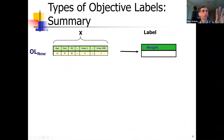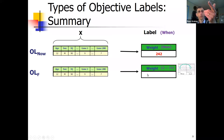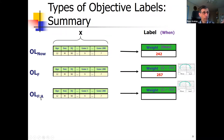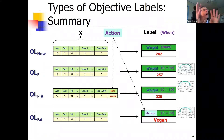Let me quickly summarize these four measures. Objective label now: here's a patient, the label is weight measured by a scale. Objective in the future: here's a patient now — in 30 days I ask what the weight is. Objective with future action: now I also have an action like a vegan diet, and I can ask what happens. Best action: here's a patient — tell me which action is best: vegan, Mediterranean, or no diet. That's the type of objective labels and scenarios.